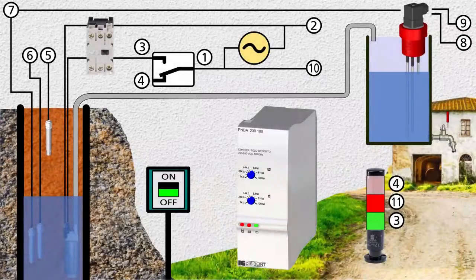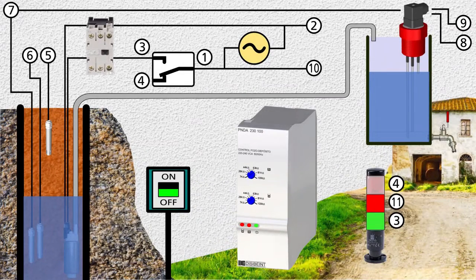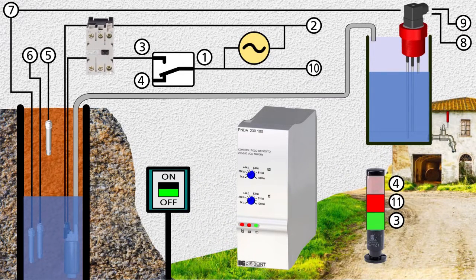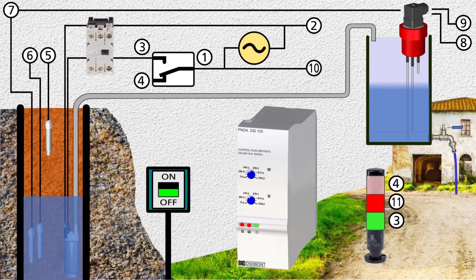The level of water in the tank decreases as it is consumed in the house. When this level falls below the minimum electrode, the relay is activated, starting the pump which begins to fill the tank.